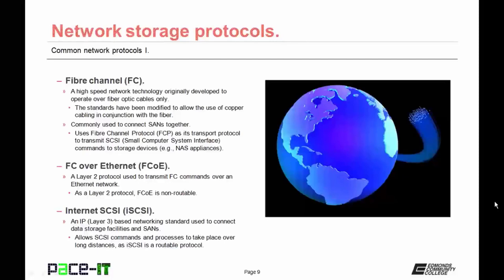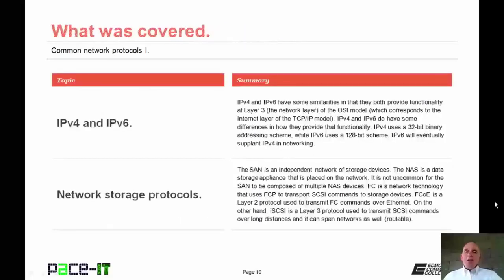Then we have FC over Ethernet, or FCoE, a Layer 2 protocol used to transmit FC commands over an Ethernet network. As a Layer 2 protocol, FCoE is non-routable. Finally, we have Internet SCSI, or iSCSI, an IP-based network standard used to connect data storage facilities and storage-attached networks. It is a Layer 3 protocol that allows SCSI commands and processes to take place over long distances, as iSCSI is a routable protocol. That concludes this session on Common Network Protocols Part 1.